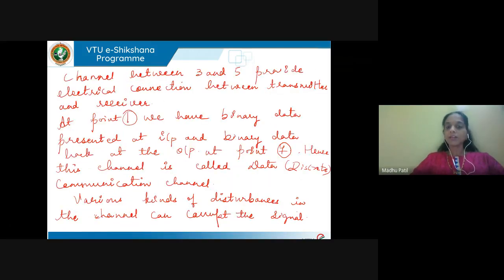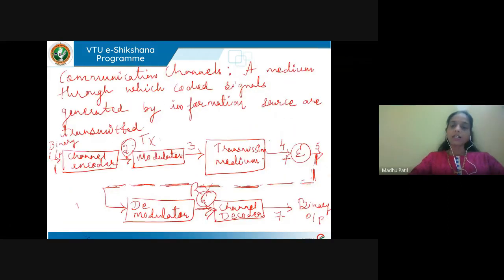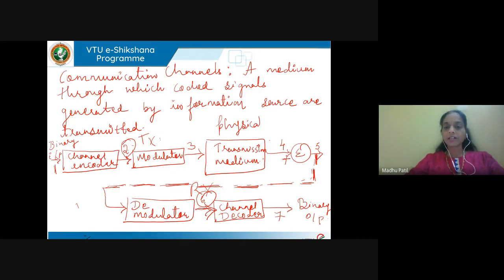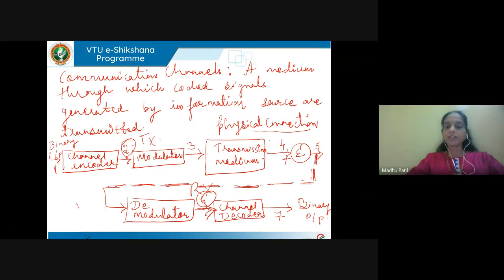Coming to points 3 and 5 in our block diagram, points 3 and 5 represent the transmission medium. It provides a physical connection between input and output, or between the transmitter and receiver. That is, the transmission medium between points 3 and 5 provides the physical connection between the transmitter and the receiver.